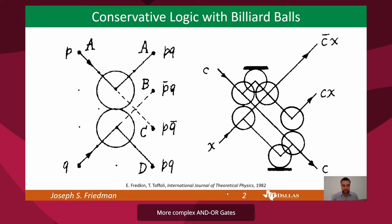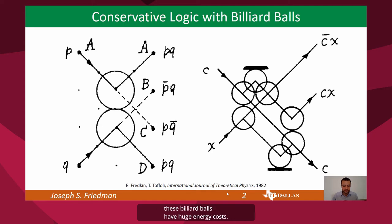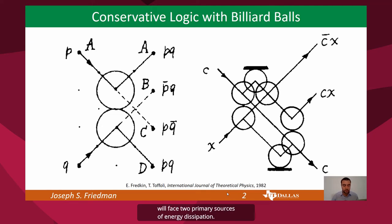More complex billiard ball gates and circuits are also possible, such as the CNOT gate shown on the right. Billiard balls are great for envisioning the concept, but the real friction and the huge forces required to move these billiard balls have huge energy costs. Any real billiard ball computer will face two primary sources of energy dissipation: the energy required to move the balls and the energy lost in the collisions.